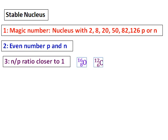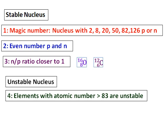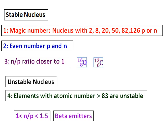For unstable nuclei, elements with atomic number greater than 83 are all unstable. Unstable means they will all be radioactive. All those elements which have an n over p ratio greater than 1 and less than 1.5 will be beta emitters, and if the n over p ratio is greater than 1.5 they will be alpha emitters.